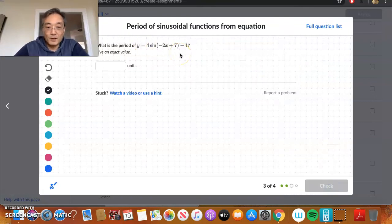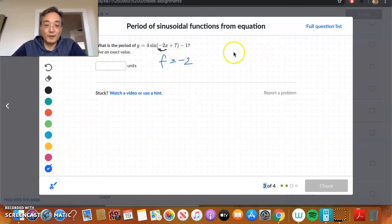Again, we look at the function, 4 sine of negative 2x plus 7 minus 1. We identify the coefficient of x. Let's use the blue, which is negative 2. That is our frequency, negative 2. Now, if you look here, frequency of negative 2. Now, the frequency is negative. But, I want you to understand that period represents distance.